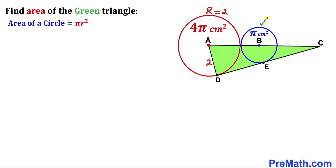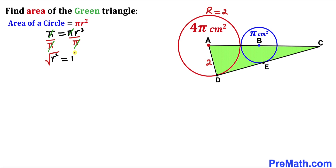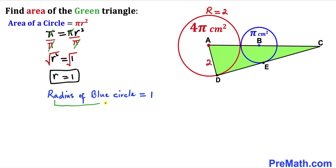Now let's focus on the blue circle whose area is π. Filling in the formula: π = π r². Dividing both sides by π gives r² = 1. Taking the square root, the radius r turns out to be 1. So the radius of the blue circle is 1 centimeter. I'll label this radius of the blue circle as lowercase r = 1.